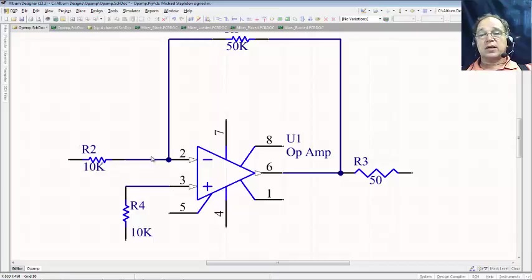So what do I have now? A 10K input, 50K feedback, 50 ohm output. I have my other resistor here on the input of my non-inverting input to keep the current balances the same. And what am I missing? Well, I'm missing a few things here. I don't have a complete circuit yet. I don't have power on my power pins. I have no connectors to get my parts in and out.